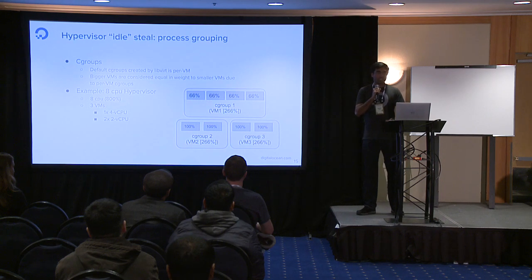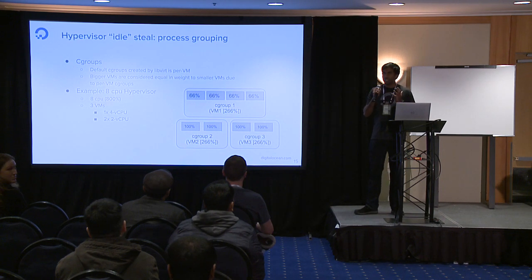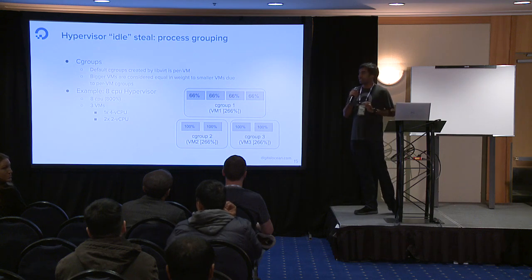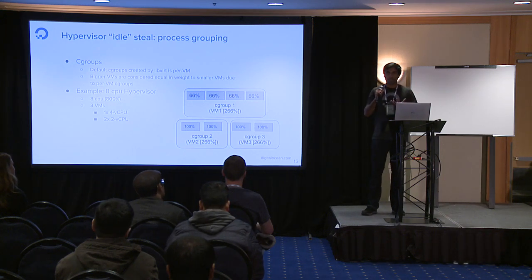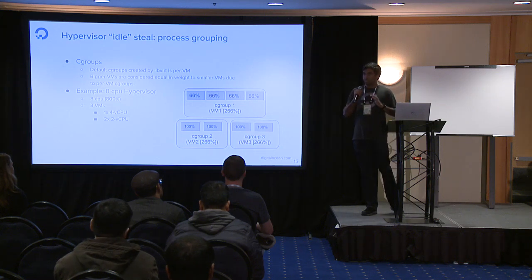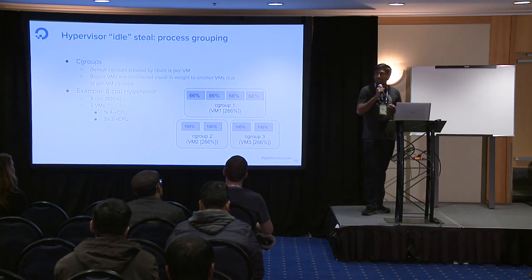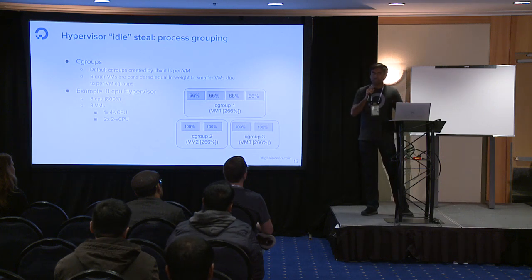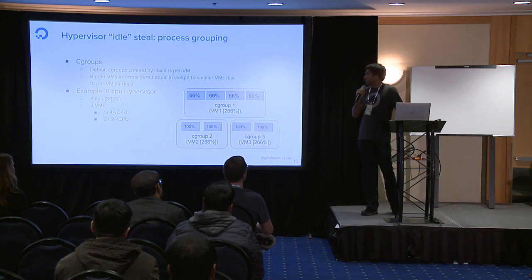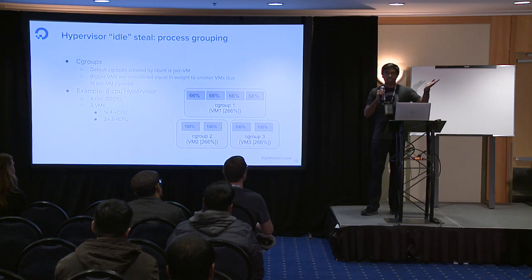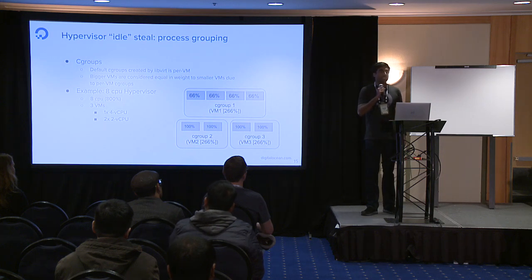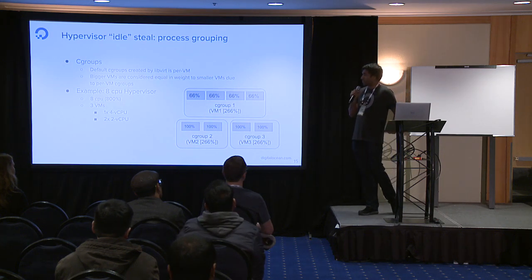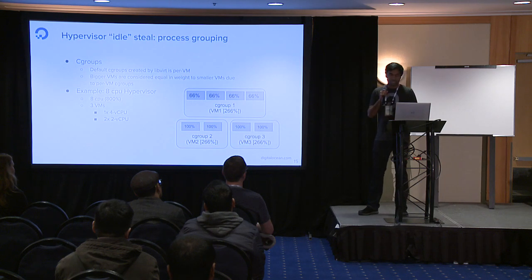The immediate fix we tried was to allocate shares proportionally - larger VMs get larger shares and smaller VMs get smaller shares. That's theoretically supposed to work, but it didn't work as expected in our fleet because cgroups were not scaling. libvirt by default creates a deep hierarchy of cgroups, and as the number of processes in the system increases, it was not scaling, so we were not seeing the results we expected.